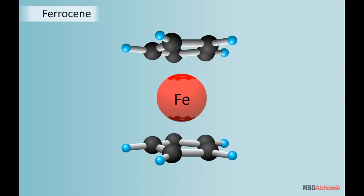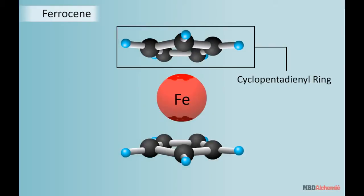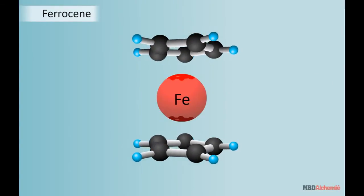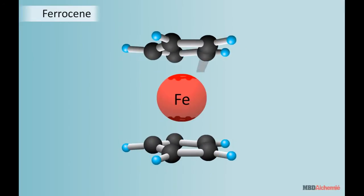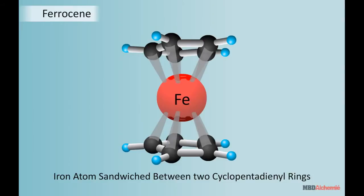Ferrocene or Bis cyclopentadienyl Iron has an iron atom present between the planes of the cyclopentadienyl rings such that all the carbon atoms are at equal distance from it. This structure is regarded as a sandwich structure in which the iron atom is sandwiched between two cyclopentadienyl rings.